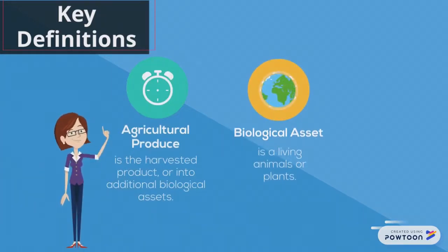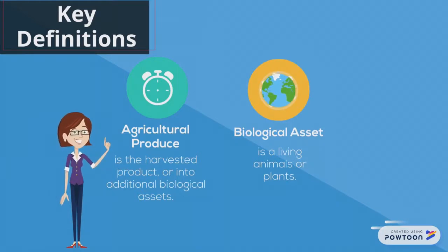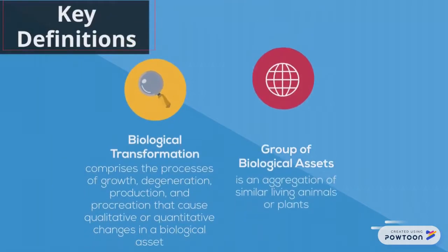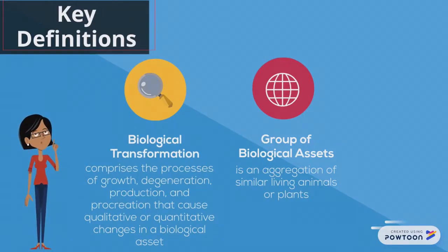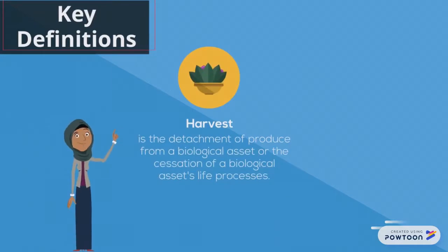A biological asset is a living animal or plant. Biological transformation comprises the processes of growth, degeneration, production, and procreation that cause qualitative or quantitative changes in a biological asset. A group of biological assets is an aggregation of similar living animals or plants. Harvest is the detachment of produce from a biological asset or the cessation of a biological asset's life processes.